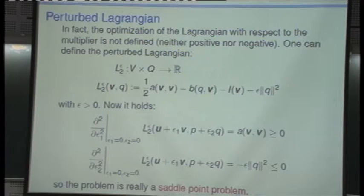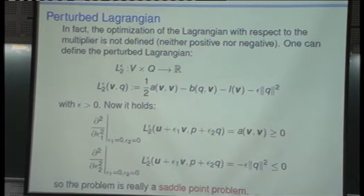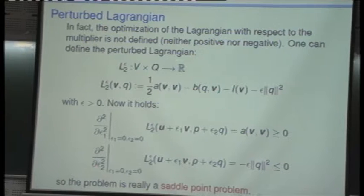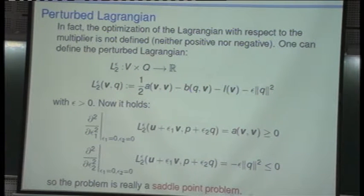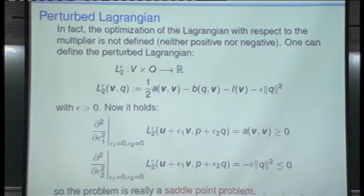Now, the second derivative with respect to epsilon_1 twice is a(v,v), which is positive. And the second derivative with respect to epsilon_2 is negative — so this shows that we really have a saddle point problem, as I said yesterday. The optimization equations of that perturbed Lagrangian are the original Stokes equations plus an additional term. Note that epsilon in the regularization term is a small number introduced to regularize the problem, different from the epsilon_1 and epsilon_2 used as directions of differentiation.